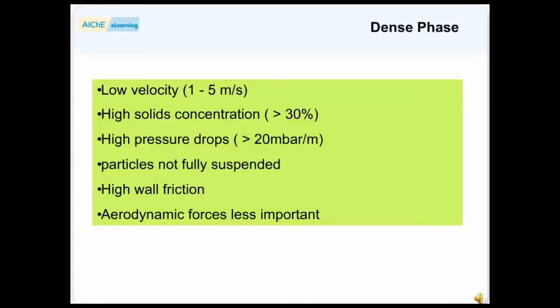Dense phase flow, characterized by low velocities, typically 1 to 5 meters per second, high solid concentrations, usually greater than 30% by volume.